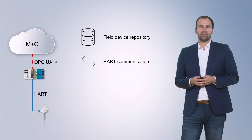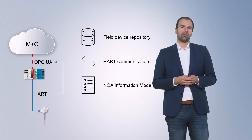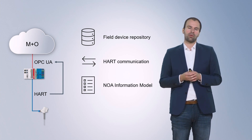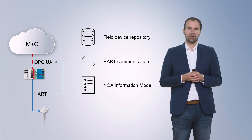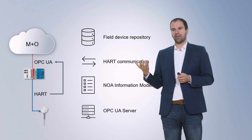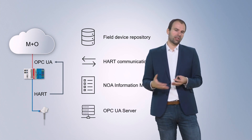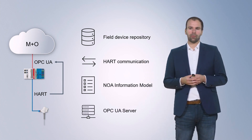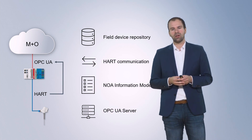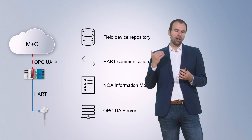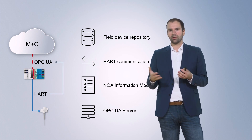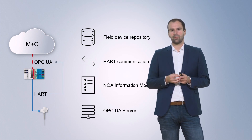Afterwards, this information is mapped to the NOA information model — we convert values to the right data format and map them accordingly. This information is then made available through the OPC UA server to higher-level systems. This provides a standardized interface that all high-level systems supporting the NOA concept can simply access automatically.